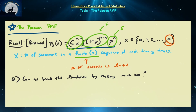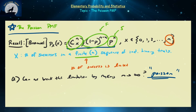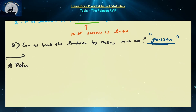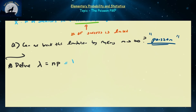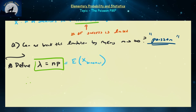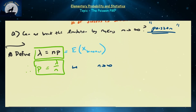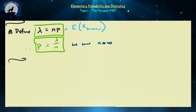The answer is yes, and the distribution that answers that is what we refer to as the Poisson distribution. To build it, we define a new parameter lambda, equal to n times p — which is the expected value of binomial random variables. So lambda equals n times p, meaning p equals lambda over n. We want n to go to infinity, so p goes to zero as n approaches infinity.